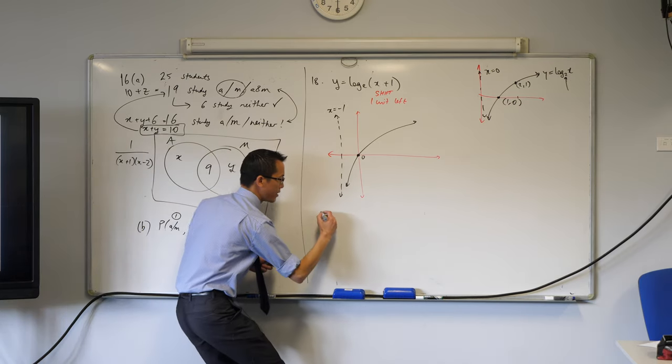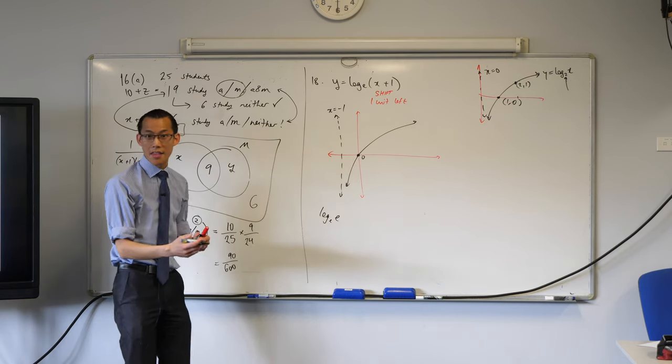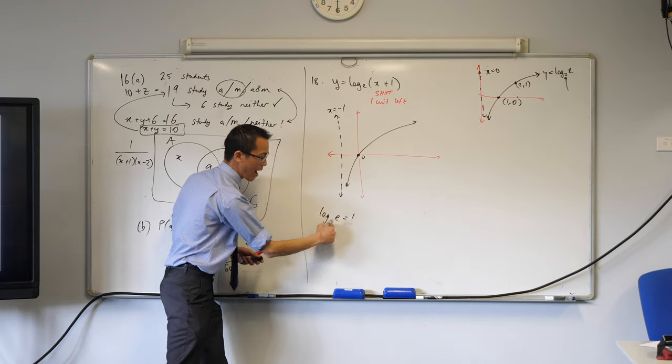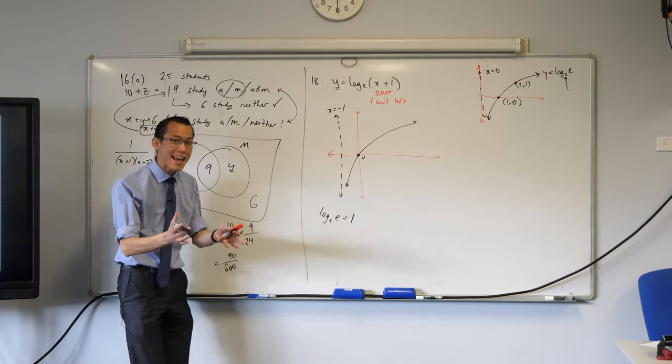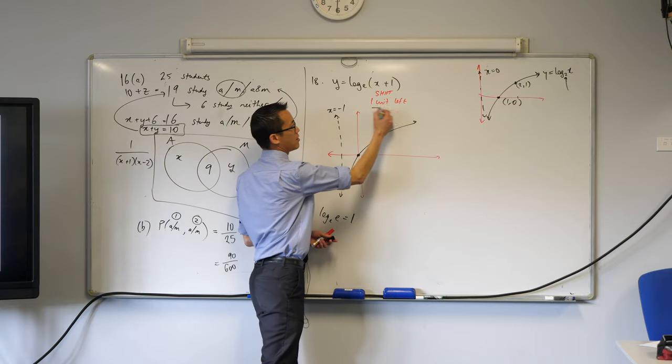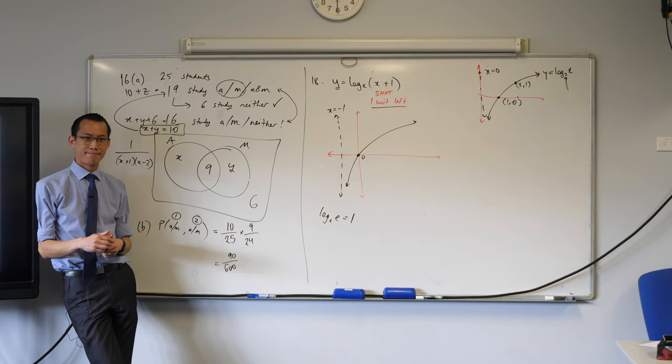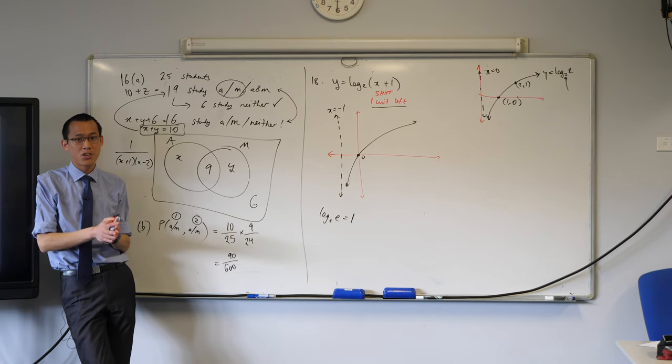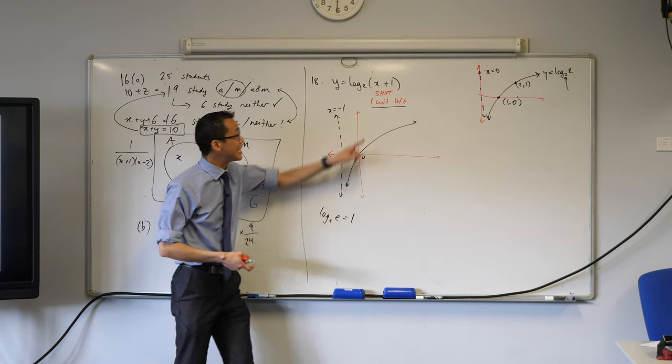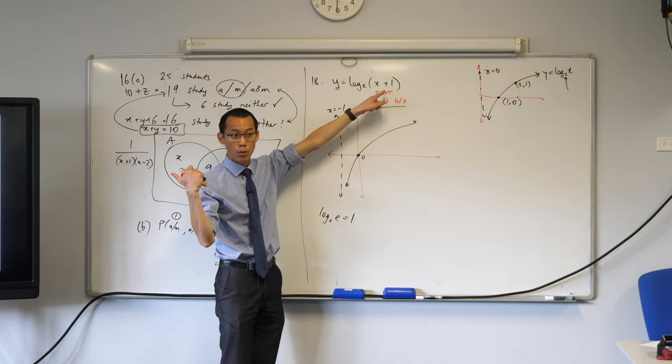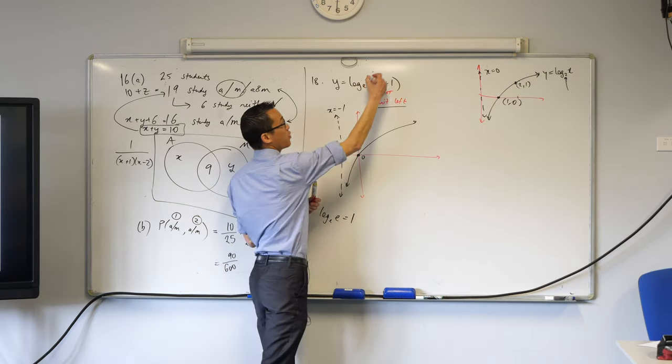Very good, so if I had log base e of e, right, that's one. That's like e to the power of 1 gives you e, right, that's the way a log equation works. The only snag is I had to do this shift one unit to the left, yeah, so instead of putting e in there, or to get in there, I've got to put, and you can see the point that I've chosen, right, e, I'll put it in red, e take away one.